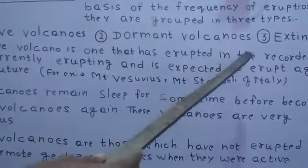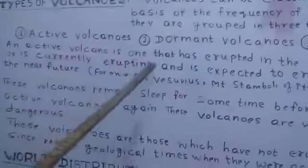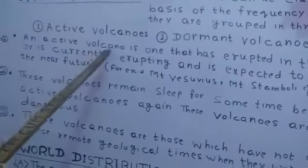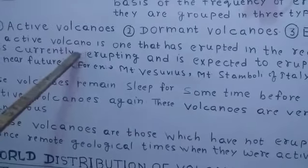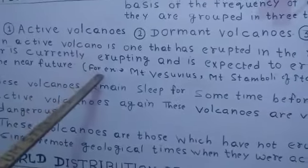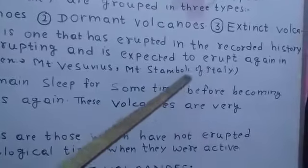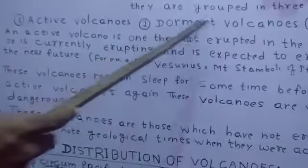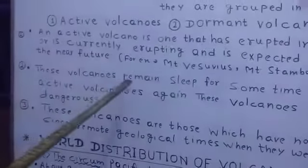An active volcano is one that has erupted in recorded history or is currently erupting and is expected to erupt again in the near future. So there is a chance of eruption of these volcanoes again and again. For example, Mount Vesuvius and Mount Stromboli of Italy are examples of active volcanoes.